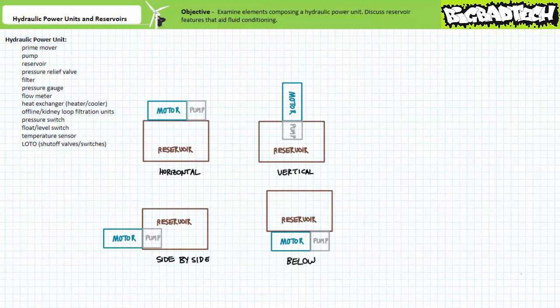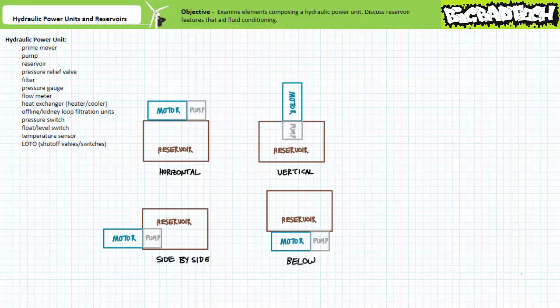How these three basic components, the prime mover, pump, and reservoir are physically arranged with one another dictate the outward appearance of the hydraulic power unit. Ordinarily, the prime mover is outside the reservoir. However, the pump could either be external or internal to the reservoir. The pump and prime mover can both be horizontally mounted on top of the reservoir.